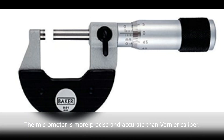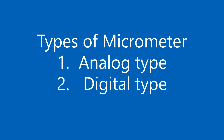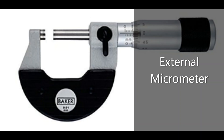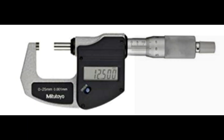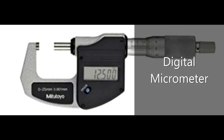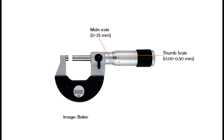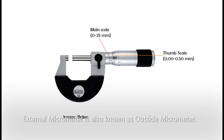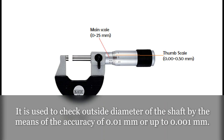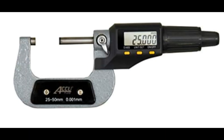Now let's take a look at Micrometer. The micrometer is more precise and accurate than Vernier Caliper. There are two types of micrometers: the external micrometer and the digital micrometer. The external micrometer is also known as the outside micrometer. It is used to check the outside diameter of a shaft with an accuracy of 0.01 mm or up to 0.001 mm.